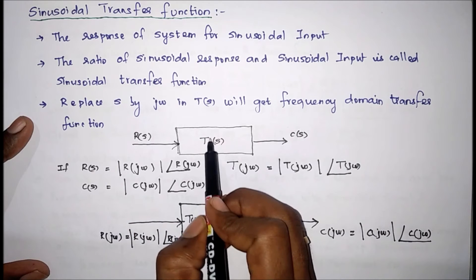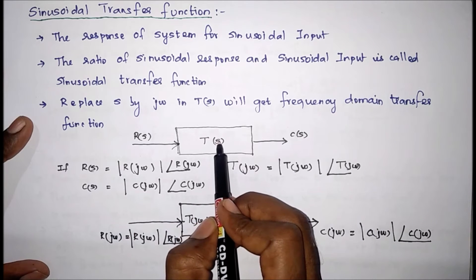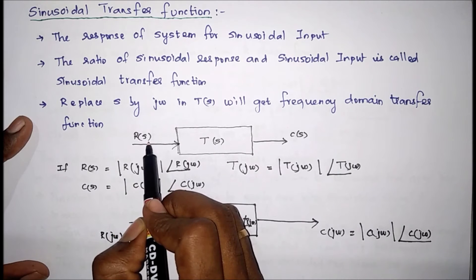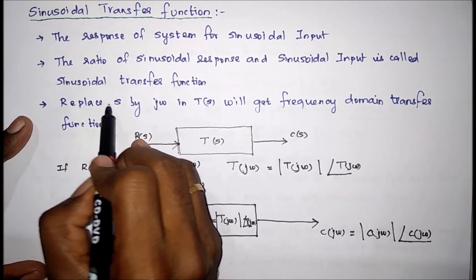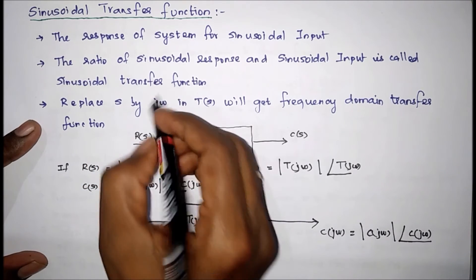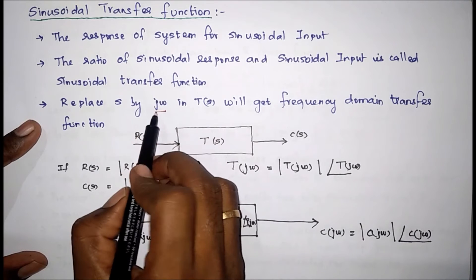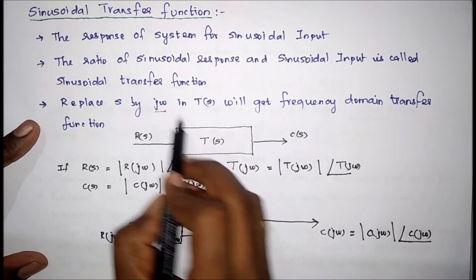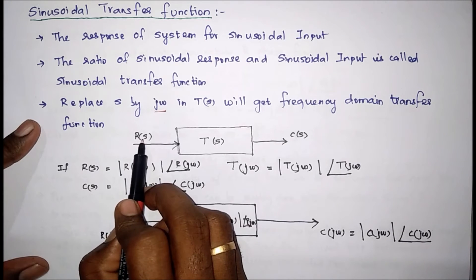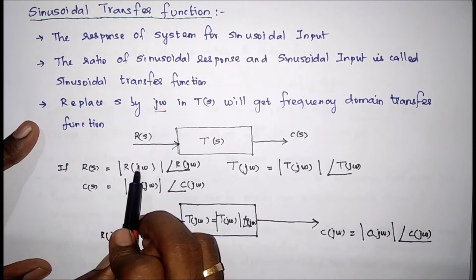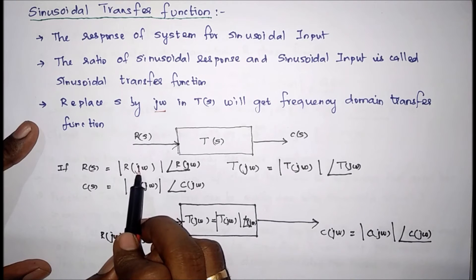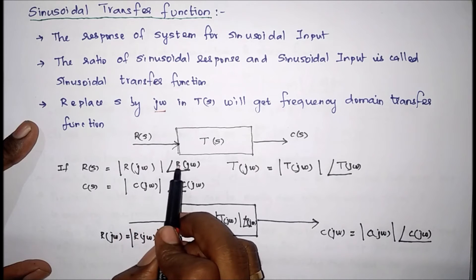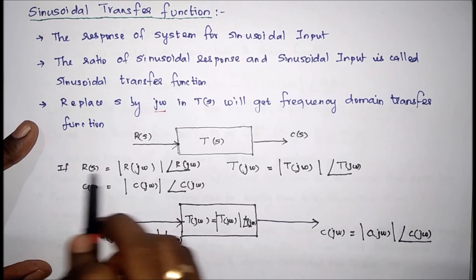For that, we know the actual system has input R(s), output C(s), and transfer function T(s). Now to get the sinusoidal form — since it is in the s-domain — we have to replace s by jω. To get the transfer function into sinusoidal form, we replace s by jω everywhere. So for R(s) we get R(jω).